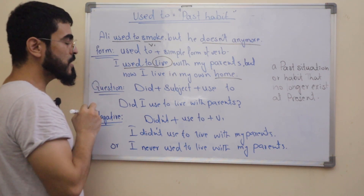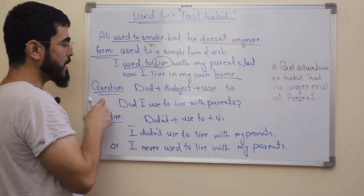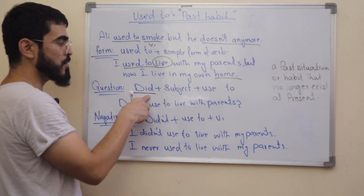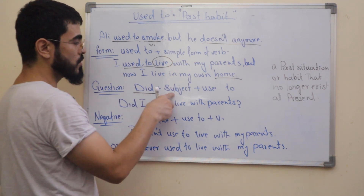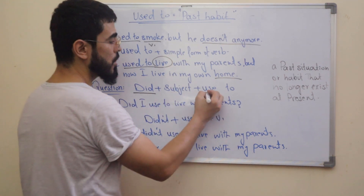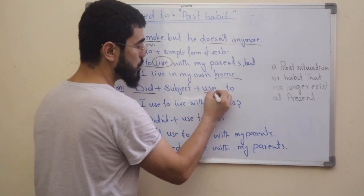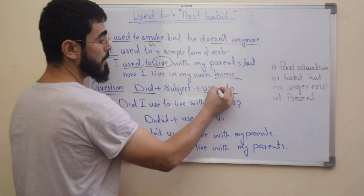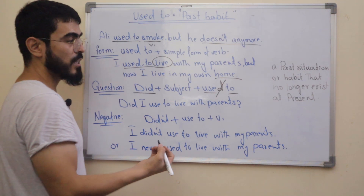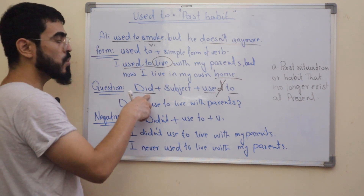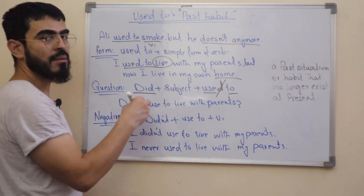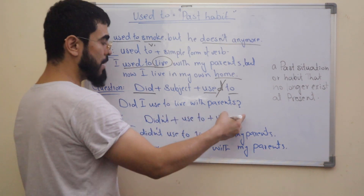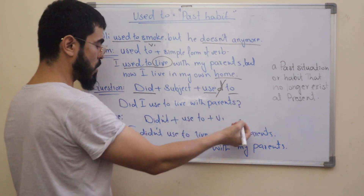How can we change this into a question? If you want to form a question, you bring 'did' to the front first, then the subject, then 'use to' — not 'used to.' We remove the D because we already used 'did' at the beginning of the sentence. For example: 'Did I use to live with my parents?' — with a question mark.